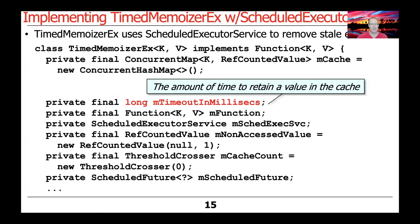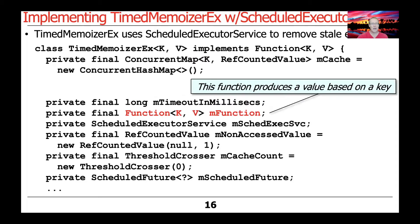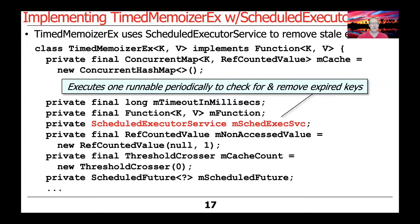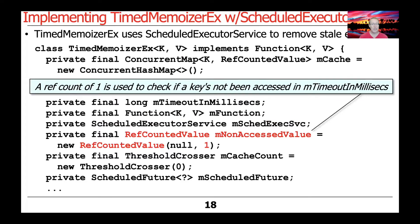We keep track of the number of milliseconds to wait for the time period to elapse, the function to call if we need to compute the value, the scheduled executor service, and the non-accessed value whose reference count is always one — all the same as before.